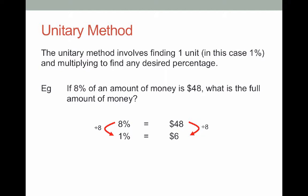Now we want to find out what 100% is. So what we do is we take our 1% and times it by 100. This gives us 100%. If we do the same to the other side, $6 times 100, we get $600. So in this case the full amount was $600.